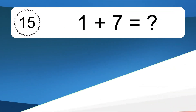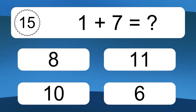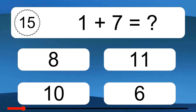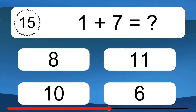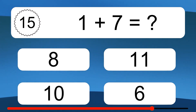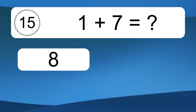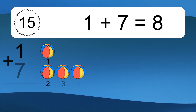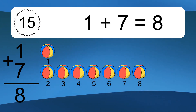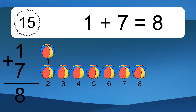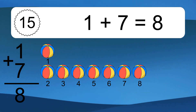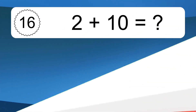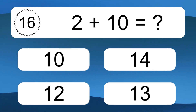1 plus 7 equals what? 1, 2, 3, 4, 5, 6, 7, 8.